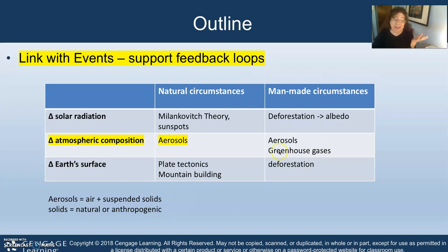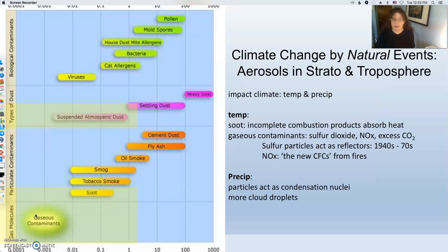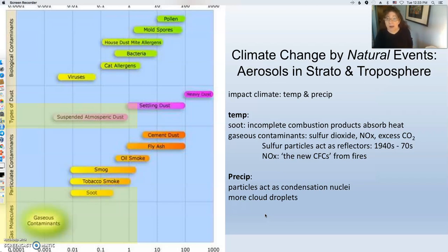Before we go into that, we have to talk about what aerosols are. Aerosols are air and suspended solids. They can be either natural or man-made. Natural aerosols include volcanic eruptions, geysers blowing off in Yellowstone, and ponds and lakes that are not well ventilated, putting out sulfur dioxide — that rotten egg smell. Those are all natural sources of aerosols.